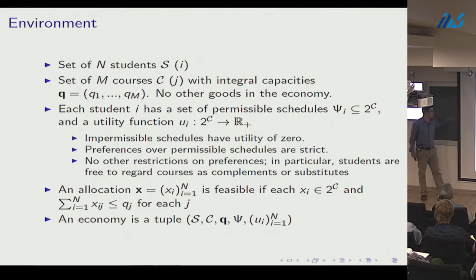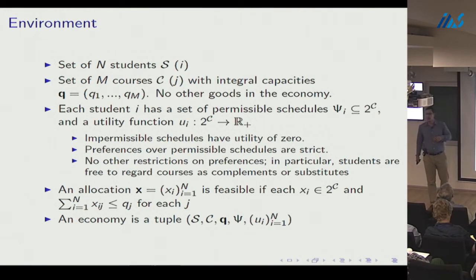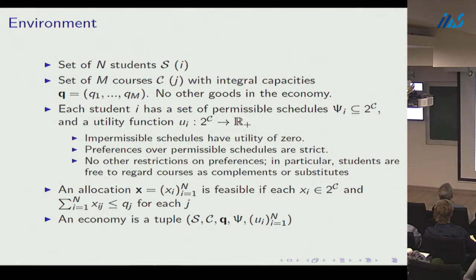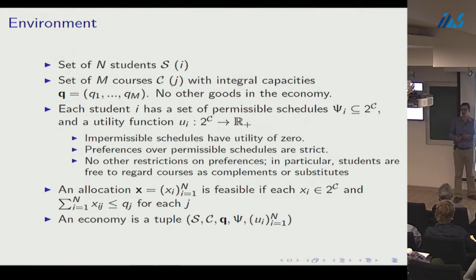Competitive equilibrium from equal incomes in this environment: agents report preferences over bundles, are given equal budgets b* of an artificial currency, and we find an item price vector p* such that when each agent is allocated her most preferred affordable bundle, the market clears. This would be a great mechanism — Pareto efficient by the first welfare theorem and envy-free since everyone gets their most preferred bundle at the realized prices. But existence is a problem.